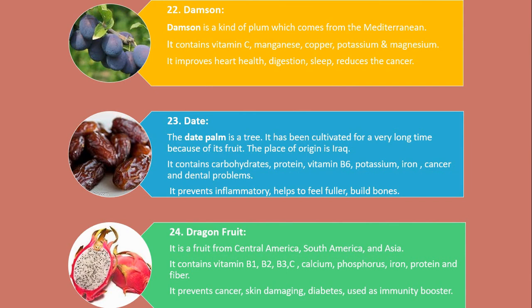Number 22. Damson. Damson is a kind of plum which comes from the Mediterranean. It contains vitamin C, manganese, copper, potassium and magnesium. It improves heart health, digestion, sleep, and reduces the risk of cancer.